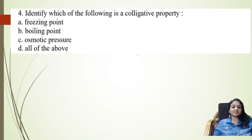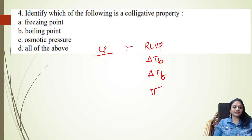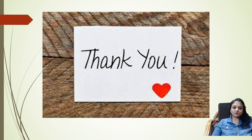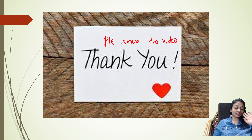Question 4: Identify which of the following is a colligative property. We said the four colligative properties are relative lowering of vapor pressure, elevation in boiling point, depression in freezing point, and osmotic pressure. Among the options, osmotic pressure is the colligative property. We have done case-based questions and I will be coming up with more videos. Please share the video. Thank you so much.